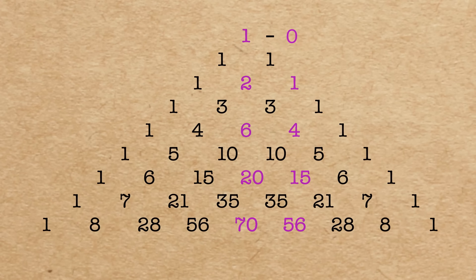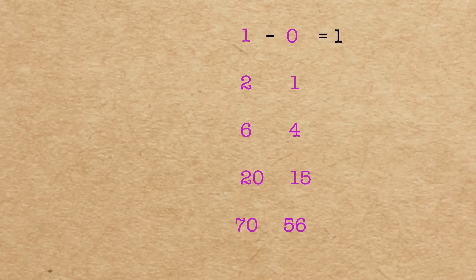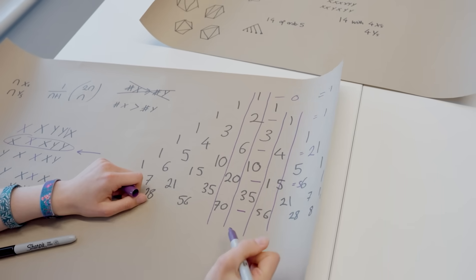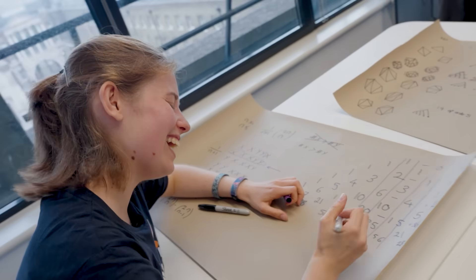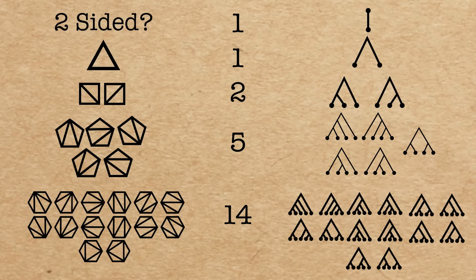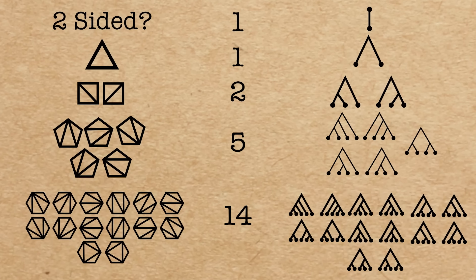So one minus zero is our first one. Two minus one is our second one. Six minus four gives the two. This gives the five. And to finally finish off 70 minus 56. It is 14. Yes. So that is the Catalan numbers.